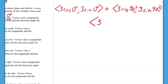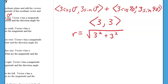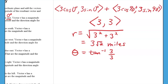The resultant vector is (3, 3). To find the magnitude, we use the Pythagorean theorem on the x and y coordinates: r equals the square root of x-squared plus y-squared, which gives the square root of 18, or 3 root 2 miles. To find the direction, we use inverse tangent of y over x, which is inverse tangent of 3 over 3. The calculator gives 45 degrees. Since this vector is in quadrant 1, 45 degrees is the correct answer.